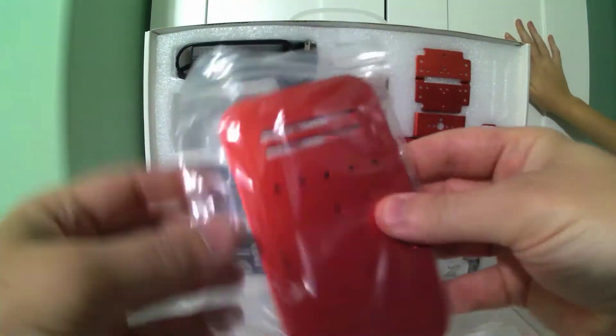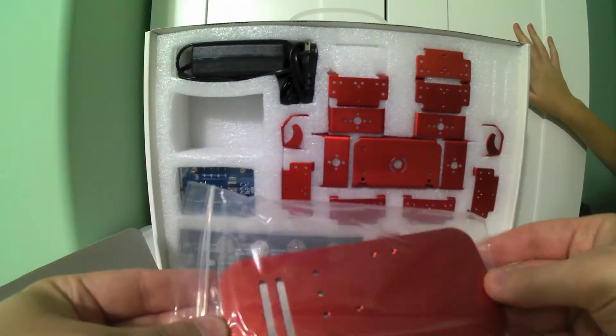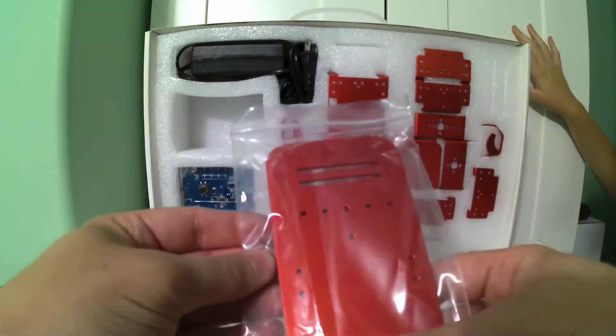And these are some of the bigger plates. So I think these might actually be the feet of the robot for it to stand or walk around on.